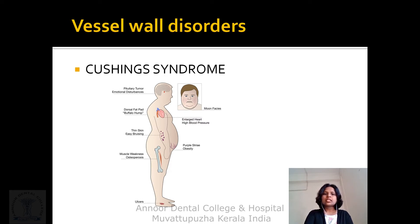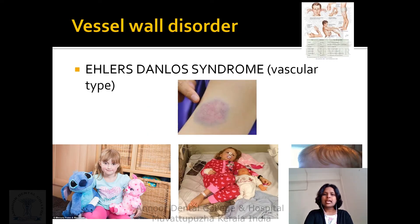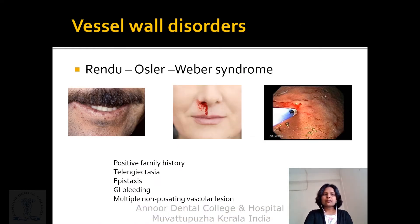In Cushing syndrome, because of increased cortisol levels, there will be bruising and bleeding in the skin. There are seven types of Ehlers-Danlos syndrome; the vascular type is most prone to vessel wall disorders. In Rendu-Osler-Weber syndrome, there is positive family history, telangiectasia, epistaxis, GI bleeding, and multiple non-pulsating vascular lesions.